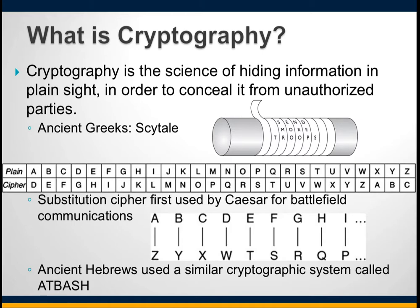In Caesar's cipher, there was a plaintext alphabet and a ciphertext alphabet arranged in a table. Instead of an A you would substitute a D, instead of a K you would substitute an N. When Caesar was ready to send a message, it was encrypted by shifting the text forward according to a key. If the key was three characters, the word 'cat' would be encrypted as 'fdw'. This type of cipher is called a rotation cipher, or ROT-3.